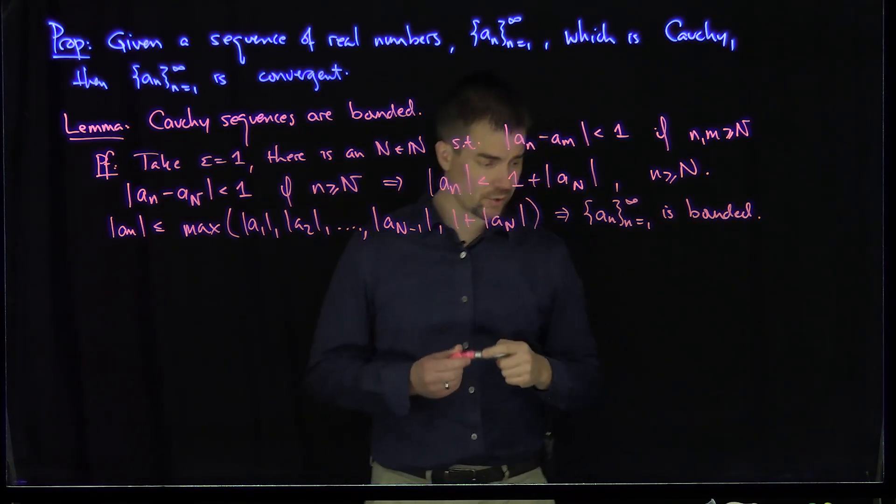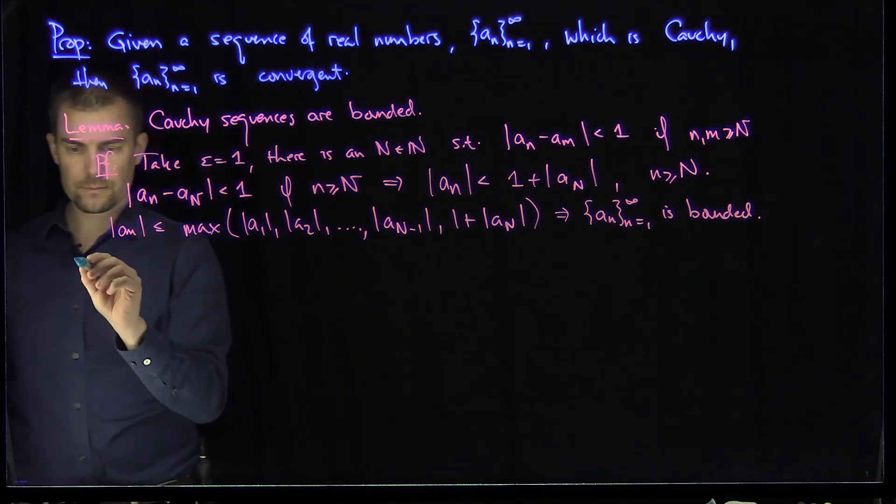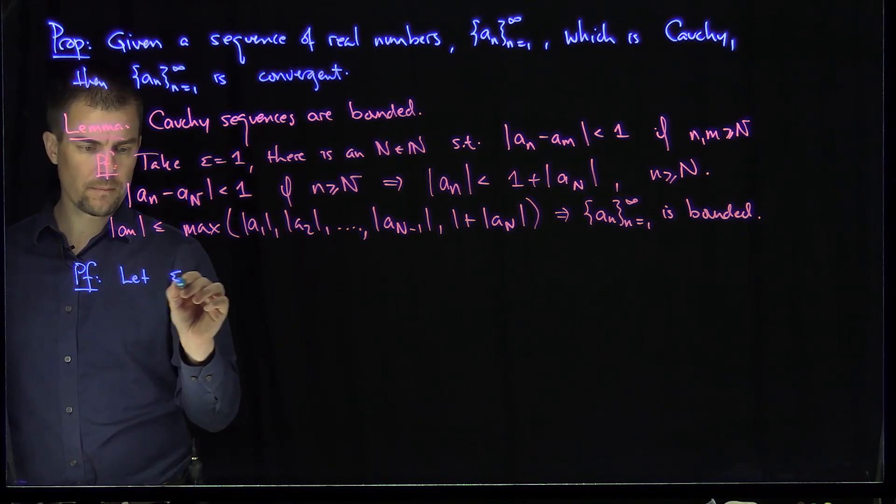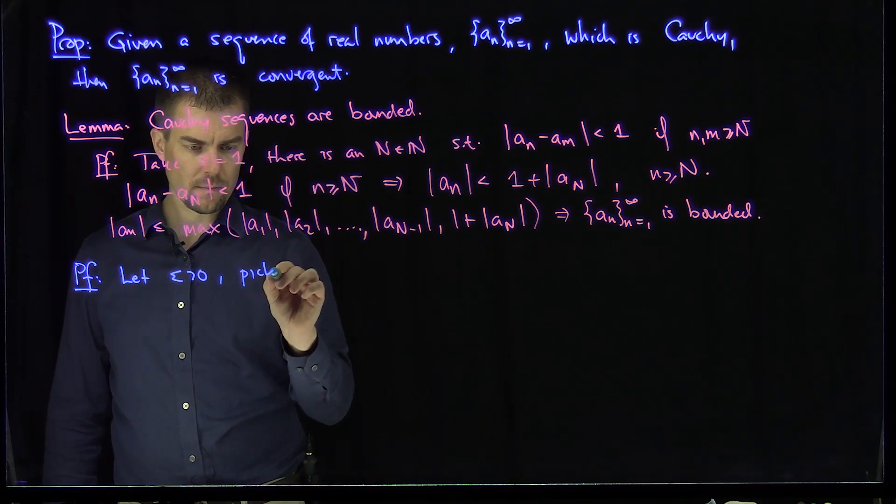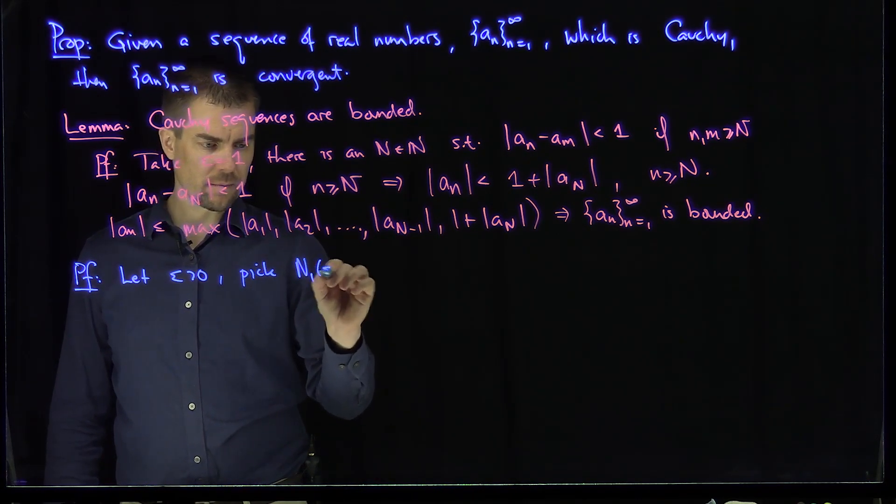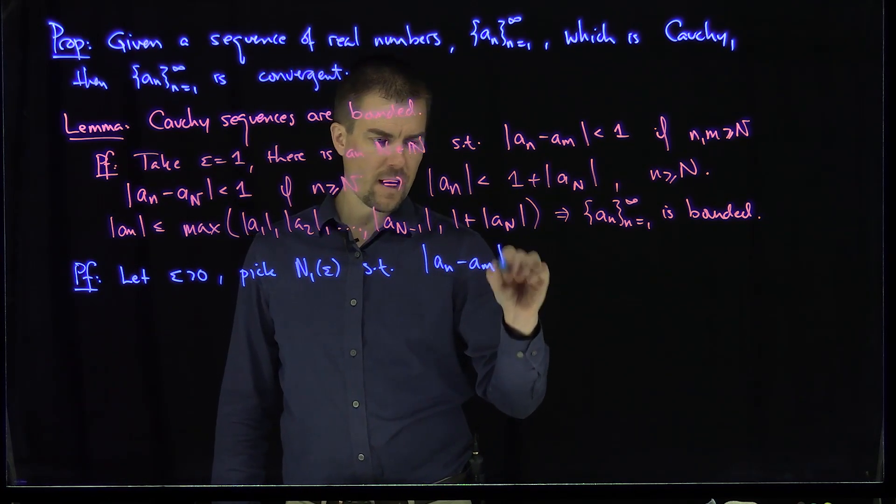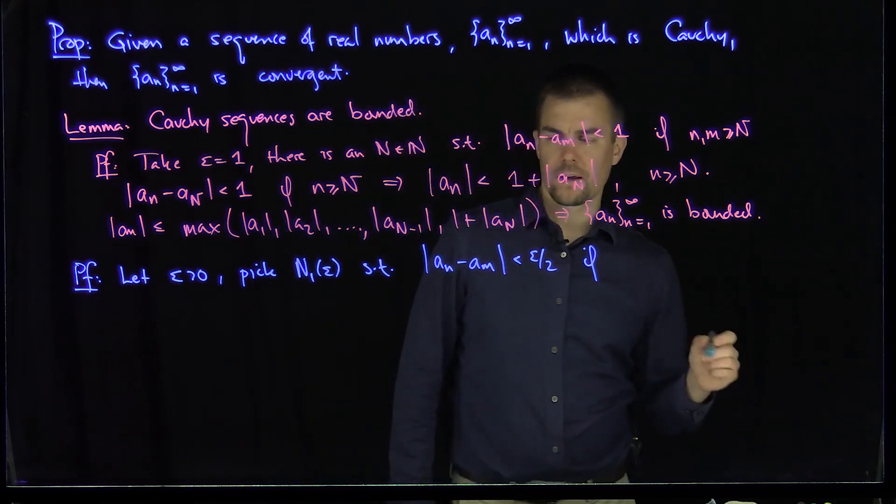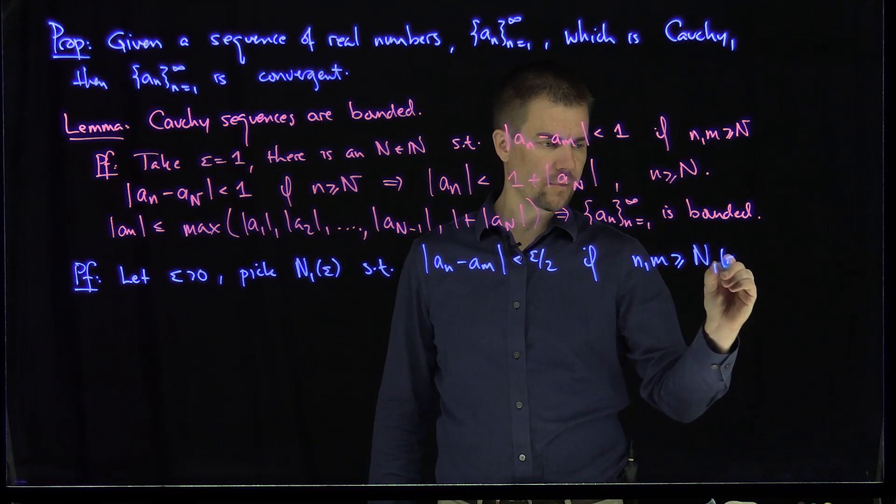And now we can go to our proposition. So the proof of our proposition is the following. Proof: Let epsilon be greater than 0, and pick N_1(epsilon) such that |a_n - a_m| is less than epsilon over 2 if n and m are bigger than or equal to N_1(epsilon).